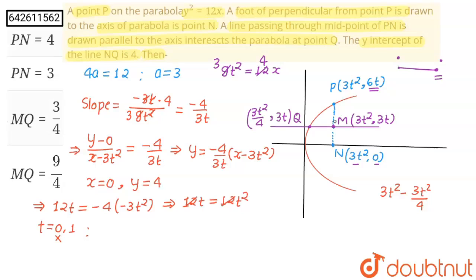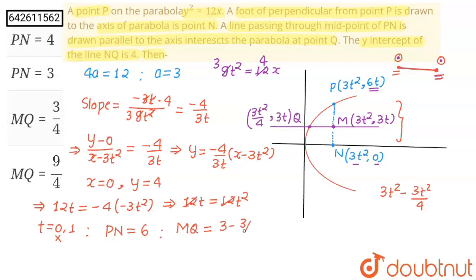With t equals 1, we find length PN equals 6t equals 6. Now for length MQ: the distance between two horizontal points is x2 minus x1, so MQ equals 3t squared minus 3t squared upon 4, which equals 3 minus 3 upon 4, giving 9 upon 4. So option 4 is correct. Thank you students.